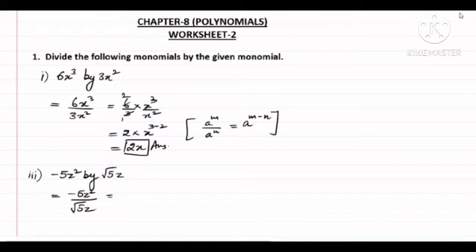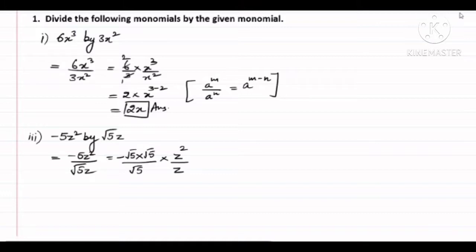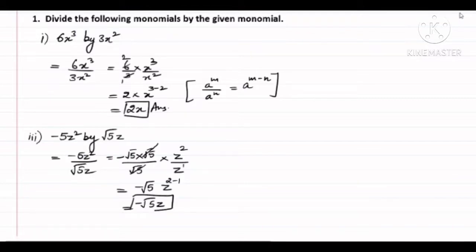Now understand this carefully. We have minus 5z² on top. The minus stays as it is. The 5 I can write as under root 5 into under root 5. Two under root 5 multiplied together make 5. Below there is already one under root 5, and we write the variable separately: z² upon z. Now under root 5 and one under root 5 cancel. So above we are left with minus under root 5. And here z² and z¹ — using the same rule, z's power becomes 2 minus 1, that is just z. So minus under root 5·z will be your final answer.